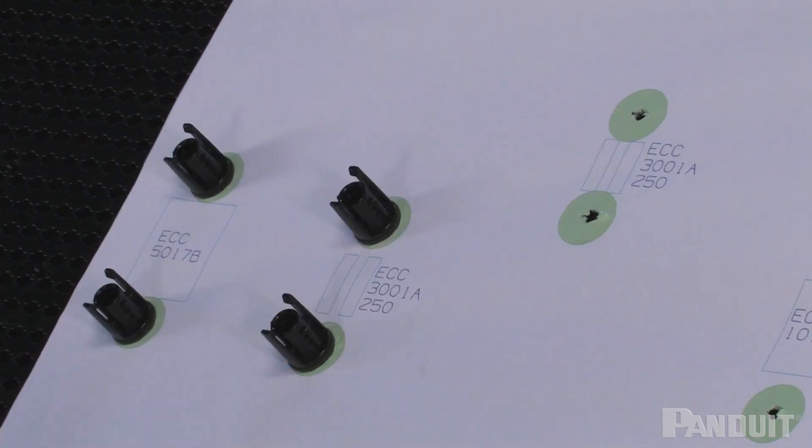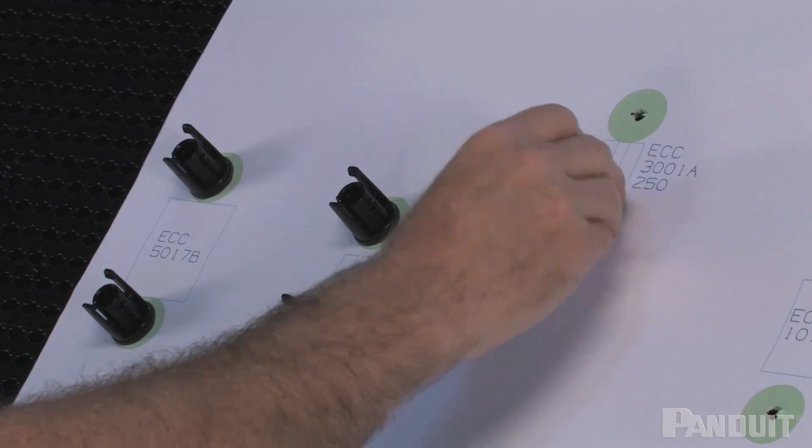This allows it to be much easier to install the mounting pegs when the paper is between the mounting peg and the grid tile.